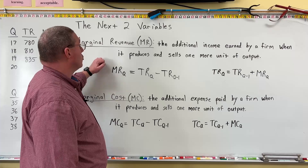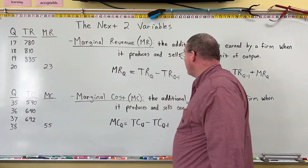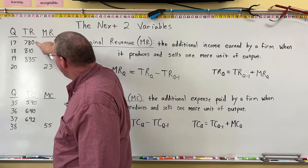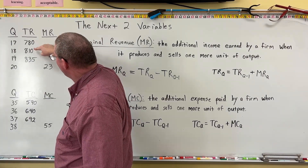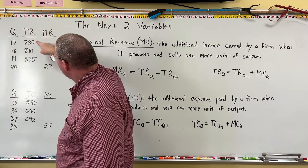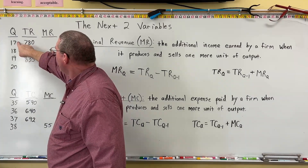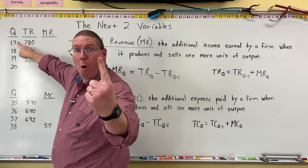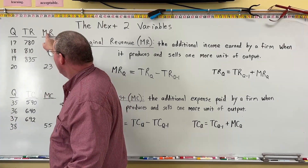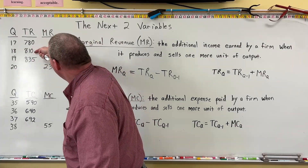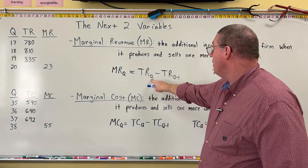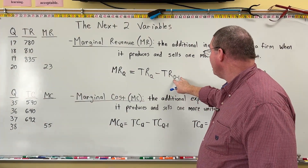The way that we find marginal revenue — one of the ways we can calculate it — is we take total revenue and subtract the previous total revenue. This tells us how much total revenue goes up by. How much does total revenue go up from 780 to 810? Well, 810 minus 780 is 30. So if we go from quantity 17 to 18, the marginal revenue — the added revenue going from 17 to 18 — is 30.